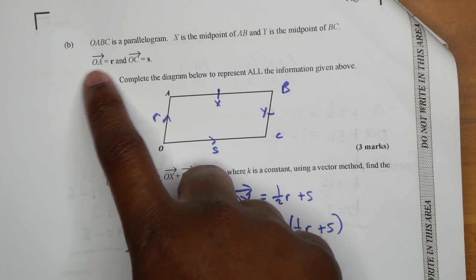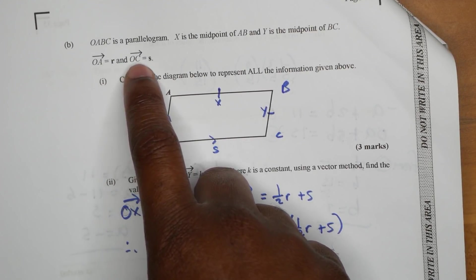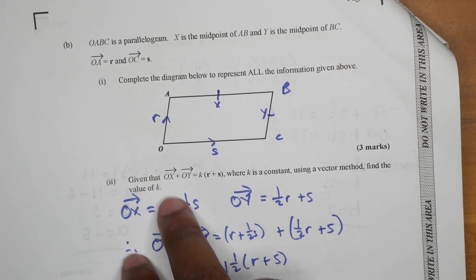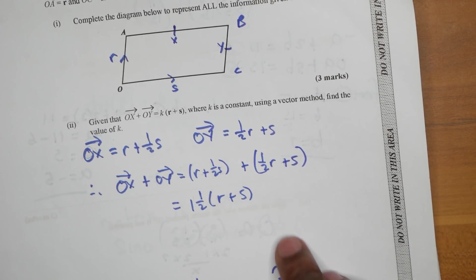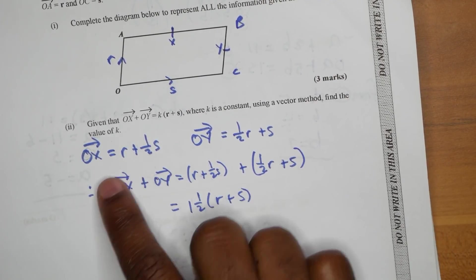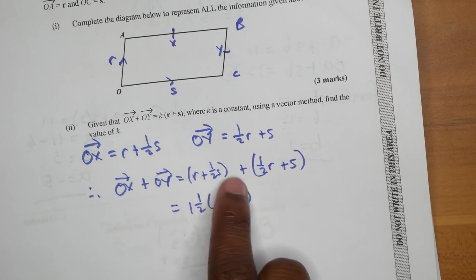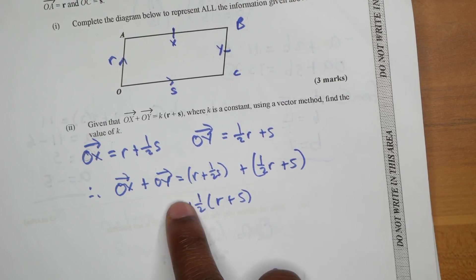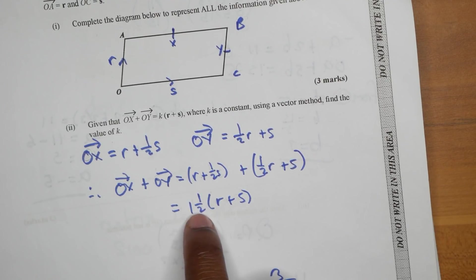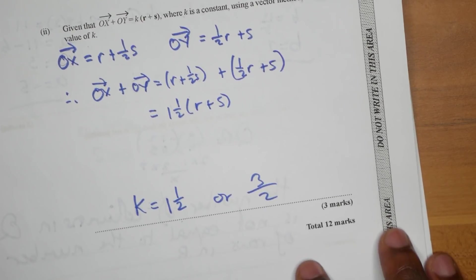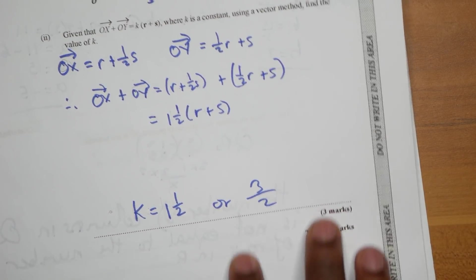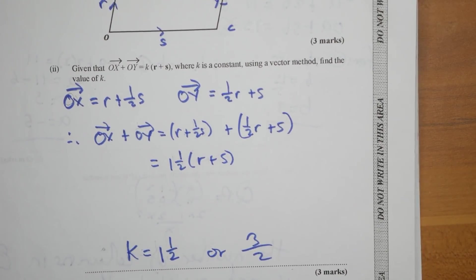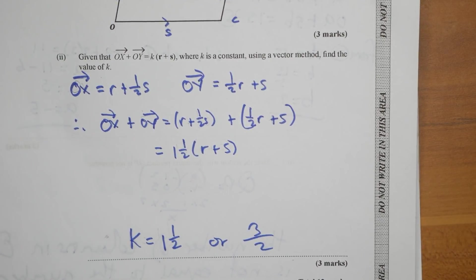Alright so OA, OC — set it at that — give them OX, some kind of thing to do here. You have OX and OY, you add the two together and get this number here — that's supposed to be K — K is equal to that. And that was the end of the paper. It was beautiful — the paper was beautiful, apart from the one or two mistakes that could have thrown you off.